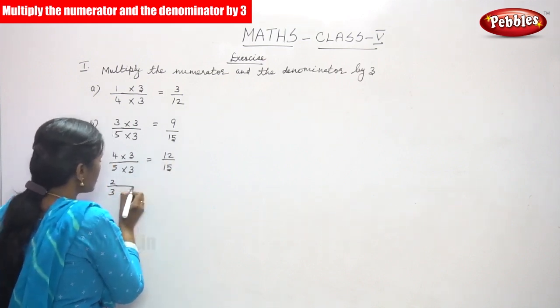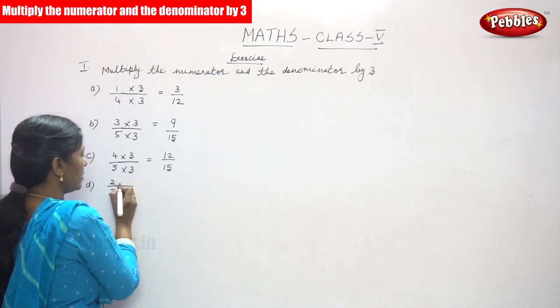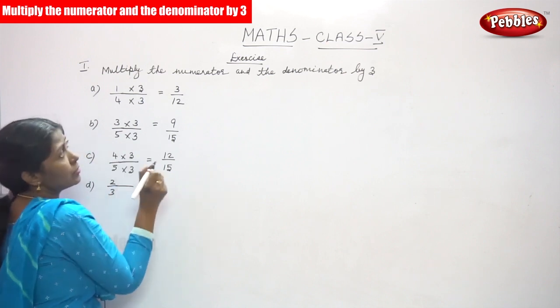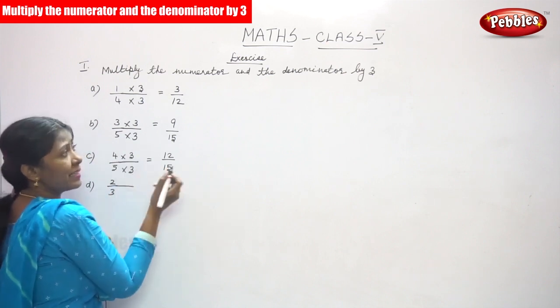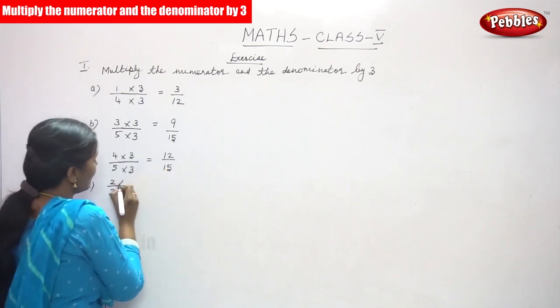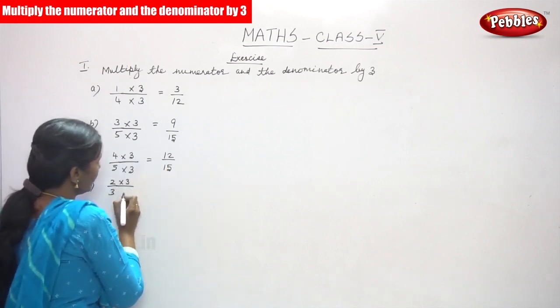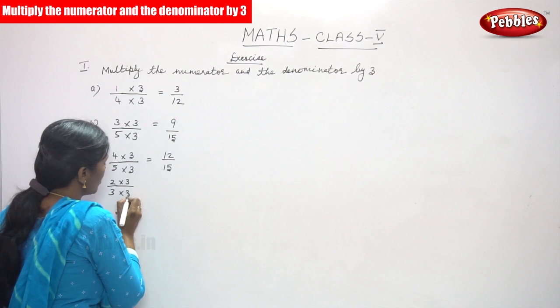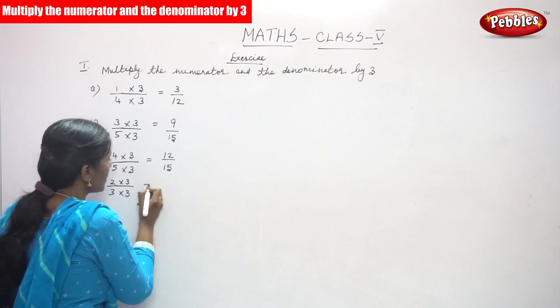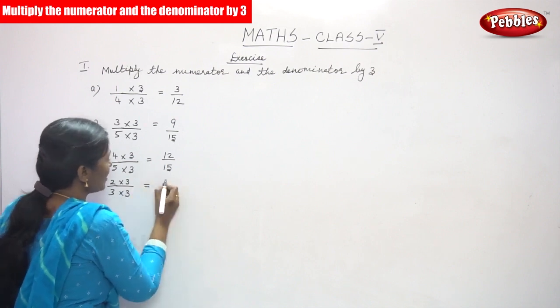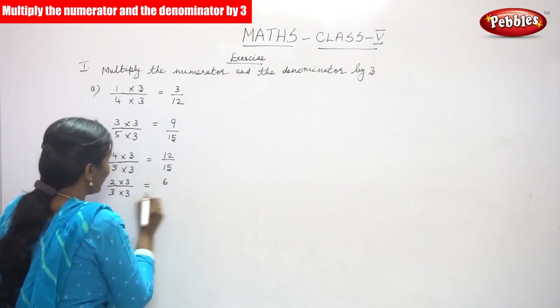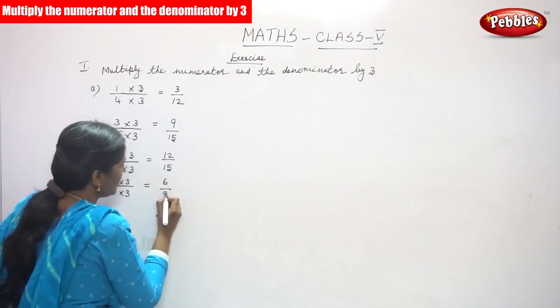Next is 2 by 3. Again, the numerator and the denominator multiply by 3, because the given question is that. So, 2 into 3 is 6, and 3 into 3 is 9.